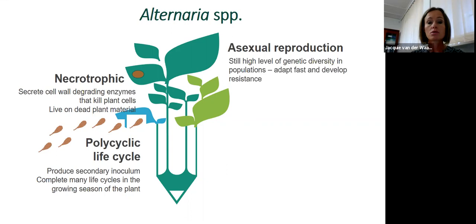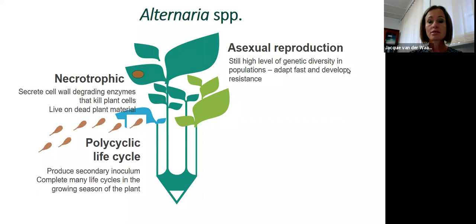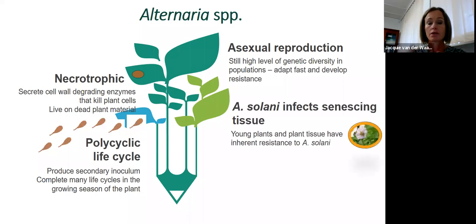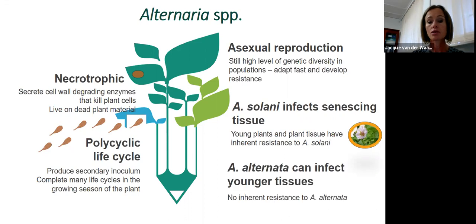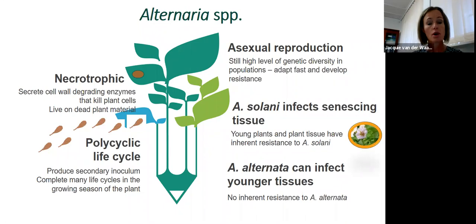Despite undergoing asexual reproduction, Alternaria species still show high levels of genetic diversity in their populations, allowing them to adapt fast and develop resistance to different cultivars and to fungicides. Alternaria solani infects predominantly senescing — older — tissues. Young potato plants have an inherent resistance to Alternaria solani. However, this is not the case with Alternaria alternata, which is able to infect younger tissues, so there is no inherent resistance in a potato plant to Alternaria alternata.